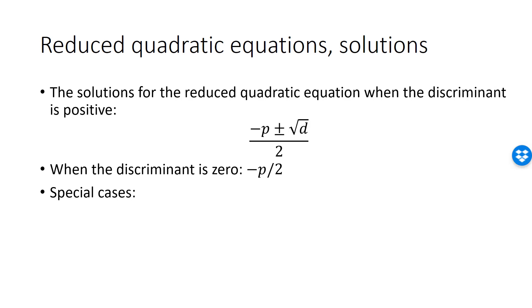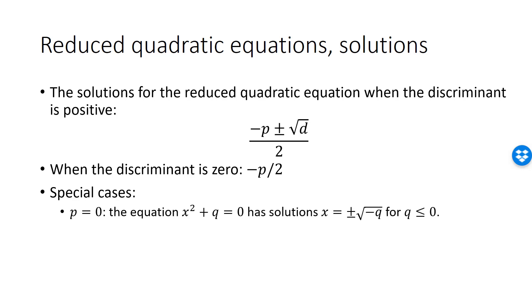Two special cases of reduced quadratic equations are worth remembering. If p is equal to 0, the reduced quadratic equation reads x squared plus q equals 0. This is simple to solve: move q to the other side so x squared equals minus q, then take the square root of both sides to get x equals plus or minus the square root of minus q. This equation has no solution if q is strictly positive.